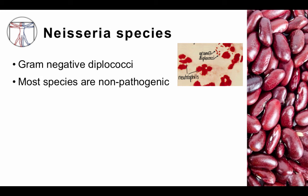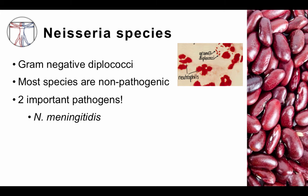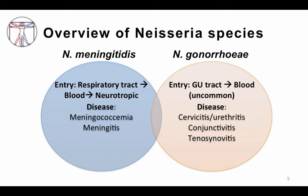Most Neisseria species are in fact non-pathogenic, and as we learn more and more about bacteria, we realize that most bacteria are non-pathogenic. But there are two bad apples: Neisseria meningitidis and Neisseria gonorrhea. These are probably bacteria that you've heard about even prior to your medical training.